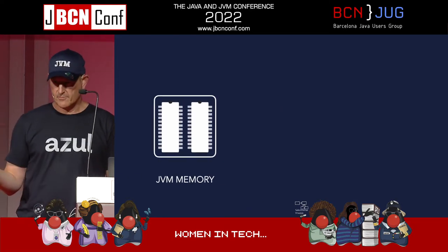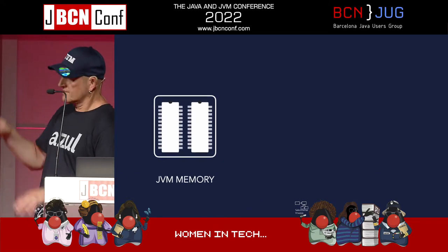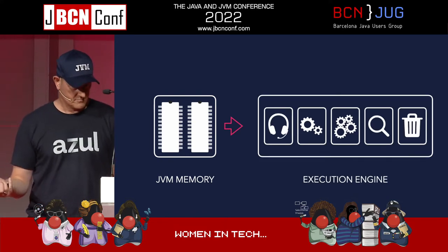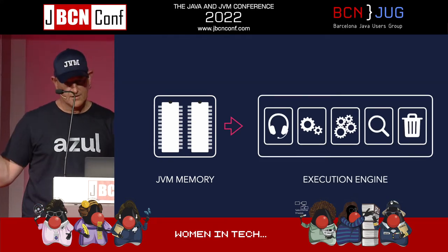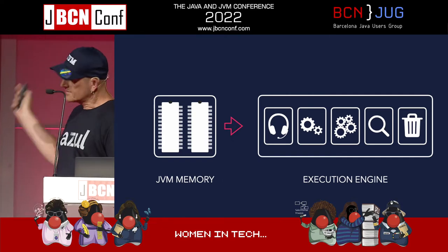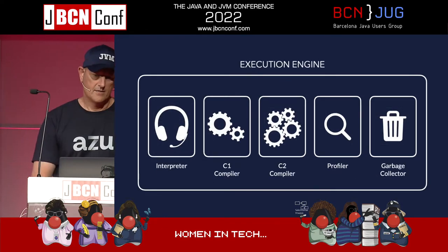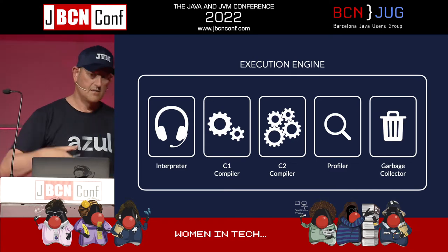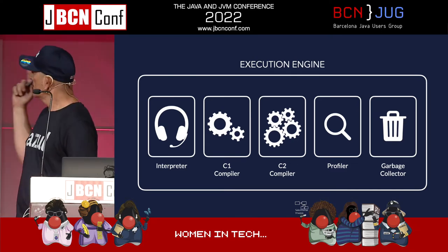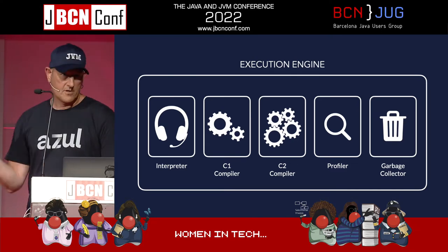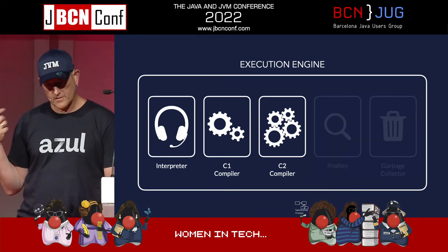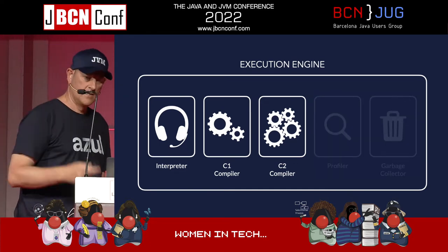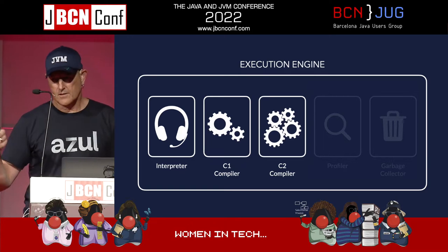From JVM memory it goes into the so-called execution engine, which contains a lot of different things. We have the interpreter, the C1 compiler, C2 compiler, a profiler, and garbage collection. For this session we just focus on the first three: the interpreter and the C1 and C2 compilers.